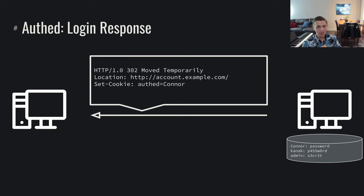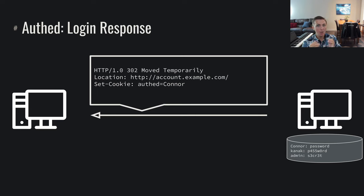What the server can do is say: okay, I understand you logged in. It responds with 302 moved temporarily — basically saying, I see your request, and if you want to continue, make another request at account.example.com, and when you make that request, use the cookie auth equals Connor. I need you to make all future requests with the cookie header saying auth equals Connor.